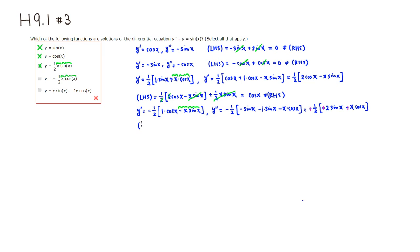Let's check the equation. Start with the left-hand side: y double prime is one-half times the quantity 2 sine of x plus x cosine of x, and we add y, which is negative one-half x cosine of x. The one-half x cosine of x terms cancel, and the 2 and 2 cancel, leaving us with sine of x — which is the same thing as the right-hand side. So this fourth one is a solution.